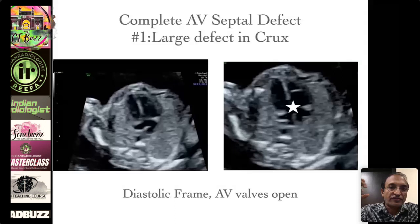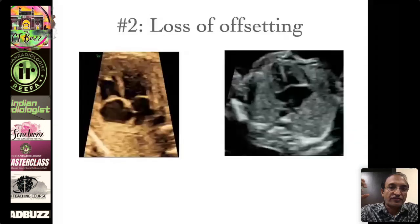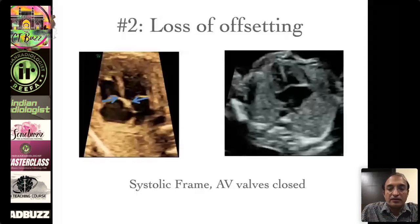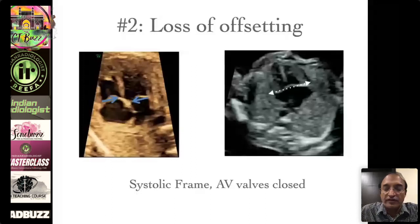The second feature: normally, when the valves are closed, there is a normal phenomenon called offsetting, where the tricuspid valve is at a lower level compared to the mitral valve. In AV septal defect, there is a linear insertion of the atrioventricular valves, and there is complete loss of offsetting.